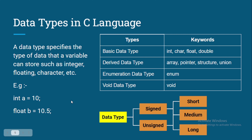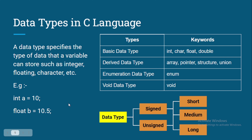Another example: we have 'float b = 10.5'. Float represents a decimal number — a floating-point number. So 'b' has a data type of float and stores the value 10.5. That is basically the job of a data type in C programming — it tells the compiler or developer what kind of data a variable can store.